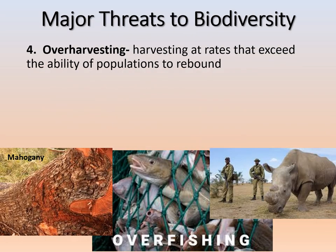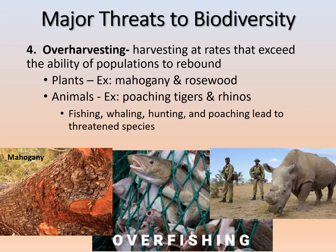Another major threat is overharvesting — any harvesting at a rate exceeding the ability of a population to rebound or recover. This includes fishing, whaling, hunting, poaching, and deforesting. Examples include the overharvesting of mahogany and rosewood trees, and poaching of tigers and rhinos. If a species cannot rebound from overharvesting, it can become threatened or extinct.